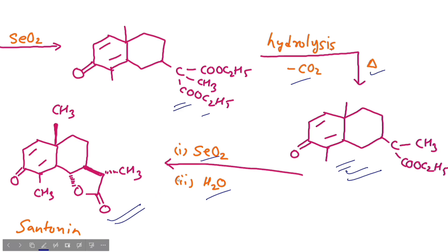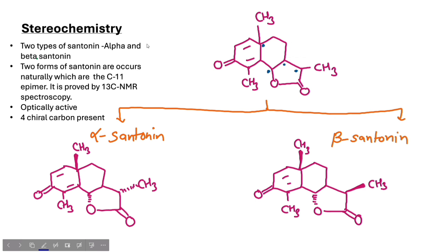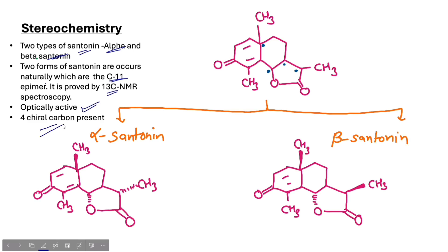The next topic is stereochemistry. If we talk about stereochemistry, we get to see two stereoisomers of Santonin. We can see alpha-Santonin and beta-Santonin. These two types of Santonin are shown here, and they will be studied in detail in stereochemistry.